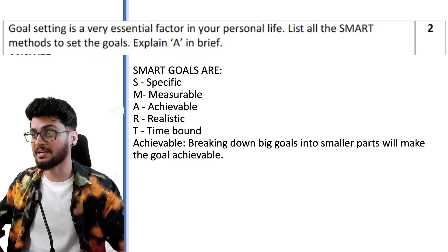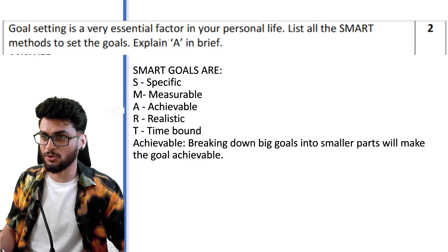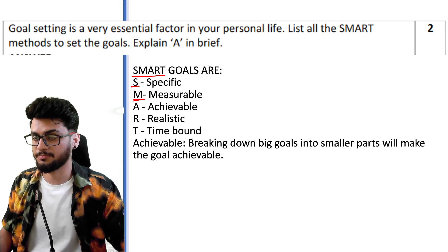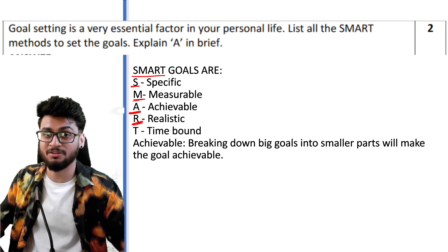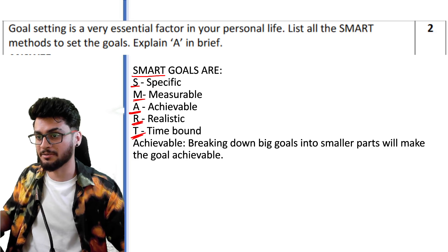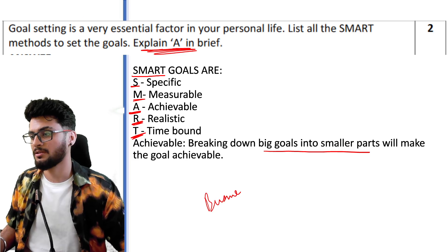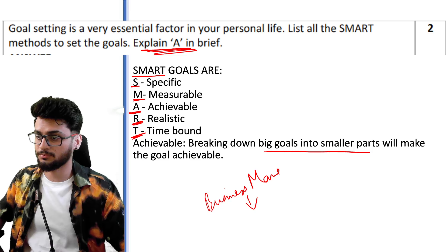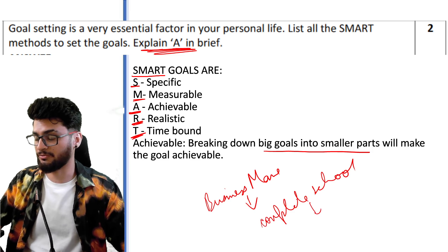'Goal setting is a very essential factor in your personal life. List all the SMART methods to set goals.' Please always remember the full form of SMART: S means Specific, M means Measurable — you can measure your goal, A means Achievable — goals you can actually achieve by breaking them into smaller parts (for example, complete school, get a degree, get a job), R means Realistic — don't say something random like 'I want to be the prime minister of the United States', and T means Time-bound — you need to give a time limit to your goal.